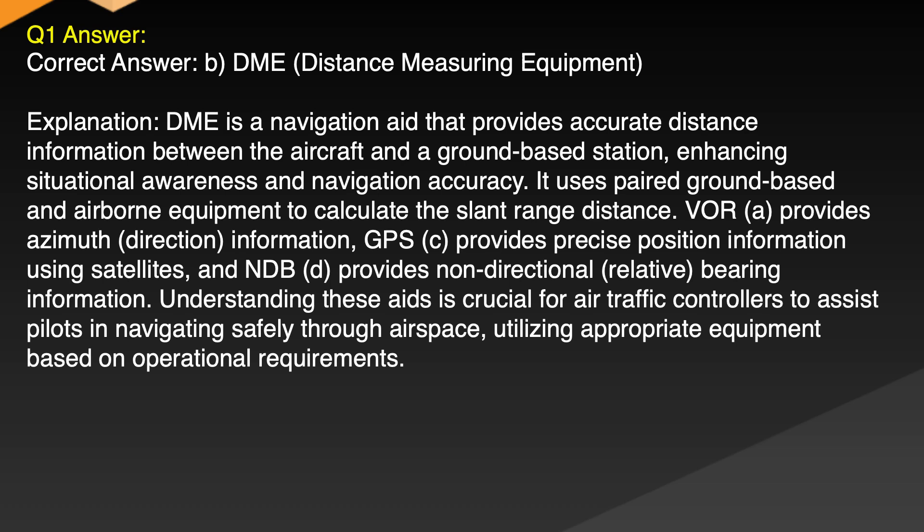Explanation: DME is a navigation aid that provides accurate distance information between the aircraft and the ground-based station, enhancing situational awareness and navigation accuracy. It uses paired ground-based and airborne equipment to calculate the slant range distance. VOR provides azimuth direction information. GPS provides precise position information using satellites. NDB provides non-directional relative bearing information. Understanding these aids is crucial for air traffic controllers to assist pilots in navigating safely through airspace, utilizing appropriate equipment based on operational requirements.